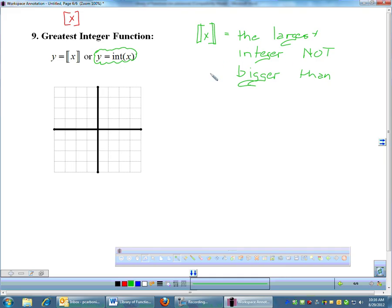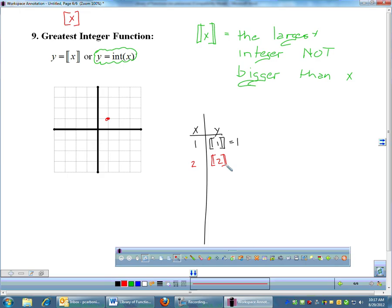Now, remember, integers, if you don't remember, is your whole numbers and their negatives. So 1, 2, 3, 4, negative 1, negative 2, negative 3, negative 4. No decimals. 1.2 is not an integer. So the greatest integer means you want to find the largest integer, not bigger than x. So I'm going to make a little x-y table, and we're going to see what happens to the greatest integer function. If I plug in 1, the largest integer that is not bigger than 1, the greatest integer of 1, it is 1. 1 is not bigger than 1. So when I plug in 1 for x, I'm going to get 1 for y. When I plug in 2 for x, the greatest integer of 2, the largest integer that's not bigger than 2, is 2. And that's going to happen every time you plug in a whole number or an integer for x.